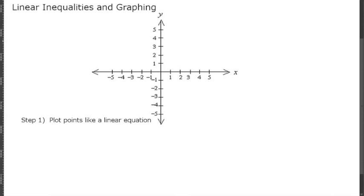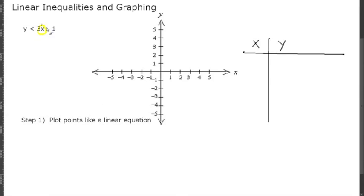In this video I'm going to explain linear inequalities and graphing. Let's see how to graph a linear inequality. Our first step is to plot points like a linear equation. So let's say I give you the equation y is less than 3x minus 1. If we're plotting points like a linear equation, we would plug in the value for x and solve for y, and then put that point on our coordinate system.